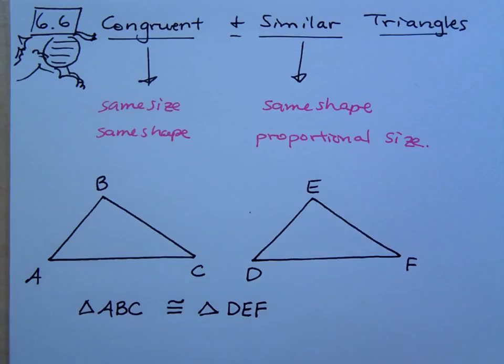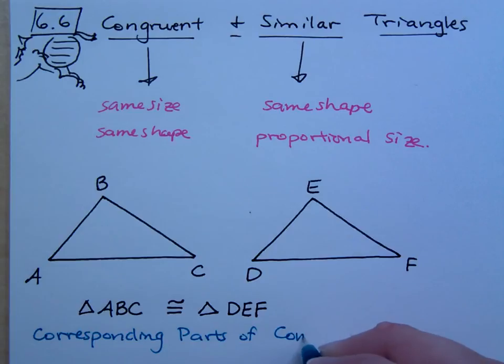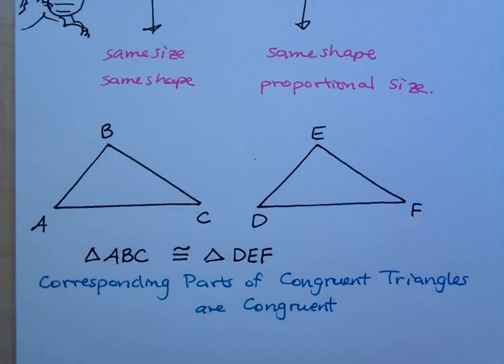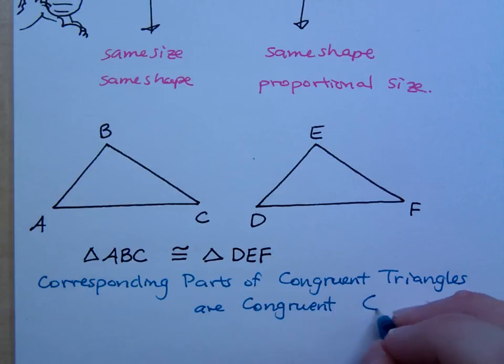So, if I say these guys are congruent, that means, boy, I almost can't even say this enough in geometry. Corresponding parts of congruent triangles are congruent. Now, if you guys remember doing proofs or anything like that in geometry a long time ago, you might have seen this as CPCTC. Corresponding parts of congruent triangles are congruent.